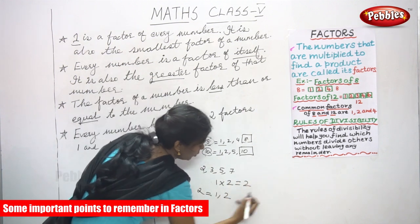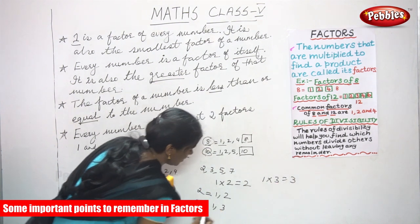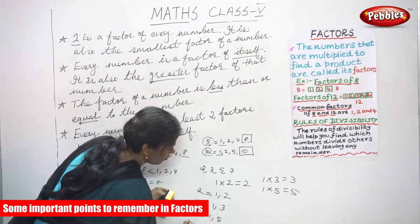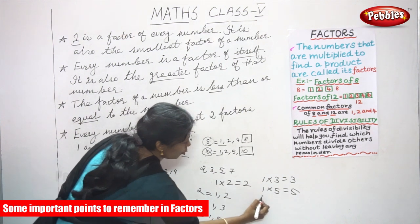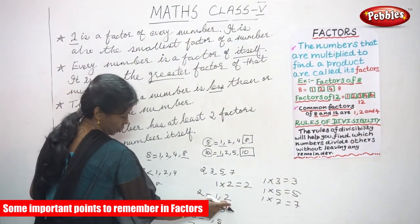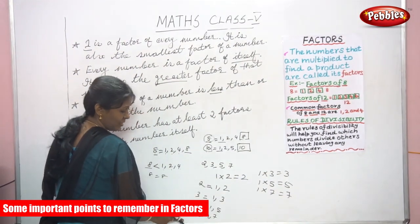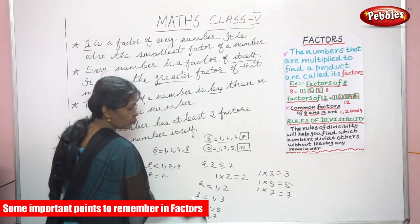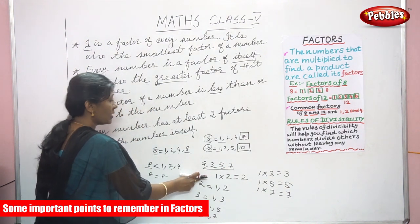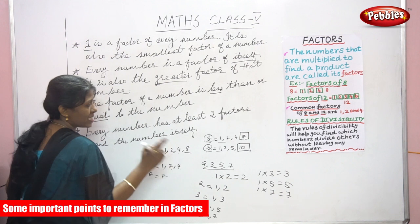The factors of three are one and three, since one times three equals three. The factors of five are one and five, since one times five equals five. The factors of seven are one and seven. So for the numbers two, three, five, and seven, only two factors come — one and the number itself. These numbers are called prime numbers.